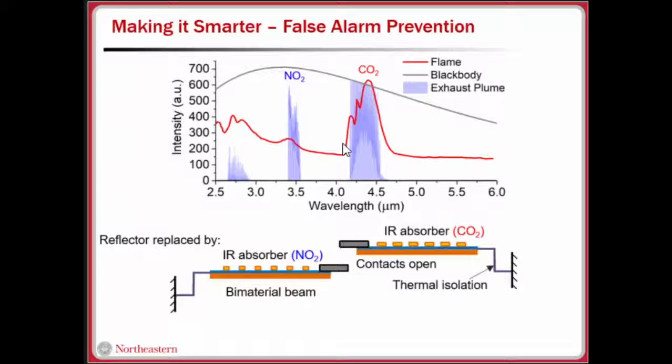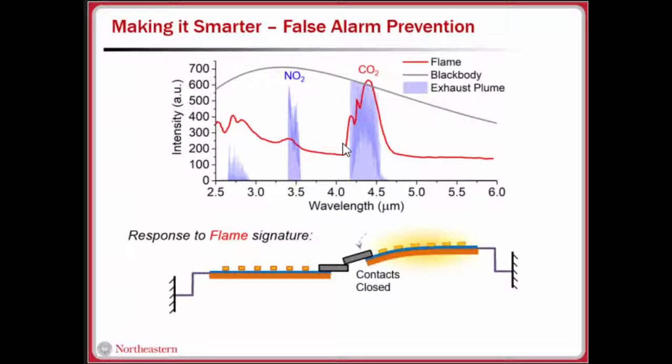To combat this, to make the device smarter and reject any other source, we incorporate another plasmonic infrared absorber on the opposite side instead of a reflector. Since this absorption is targeted at around 3.5 micron wavelength, it means that whenever it's exposed to the 4.2 micron radiation only the cantilever on the right is bending down. But when it's exposed to other sources of radiation that emit at 3.5 micron, the cantilever on the left bends down and basically increases the contact gap. It makes it impossible for the switch to turn on to these sources of infrared.